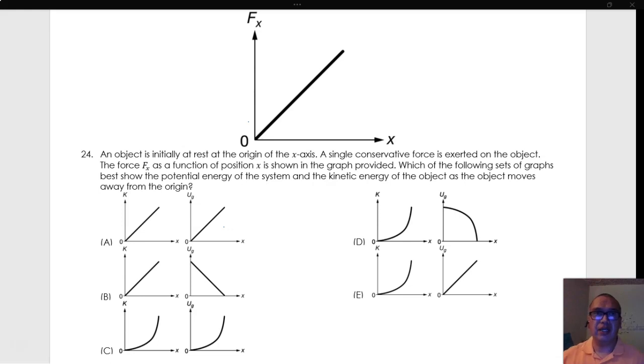An object is initially at rest at the origin of the x-axis. A single conservative force is exerted on the object. The force Fx as a function of position is shown in the graph provided. Which of the following sets of graphs best show the potential energy of the system and the kinetic energy of the object as the object moves away from the origin?